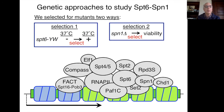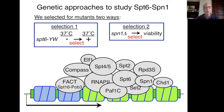We wanted to study this using a genetic approach, so we did two mutant hunts. The first, done by Olga, took advantage of the temperature sensitivity of SPT6-YW and selected for mutants that could now grow at the non-permissive temperature of 37°C. In the second, Francesca started with a strain deleted for Spt1 kept alive by a plasmid, then selected for suppressors that would allow viability.